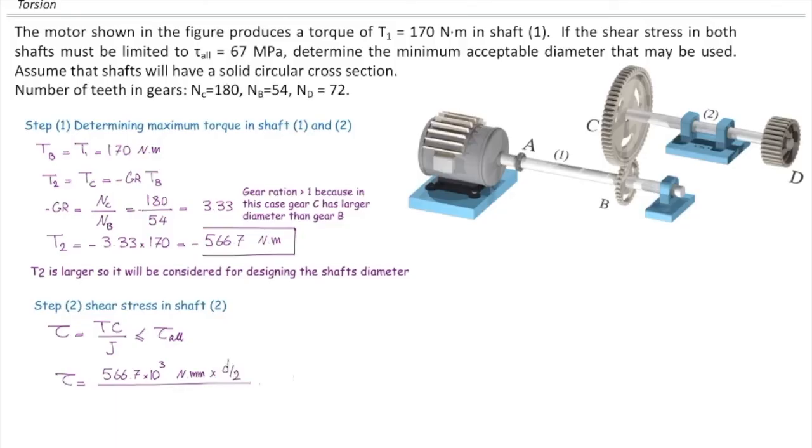C would be half of diameter, and J is pi, diameter to the fourth, over 32. And this stress should be smaller than the allowable stress, which is 67.